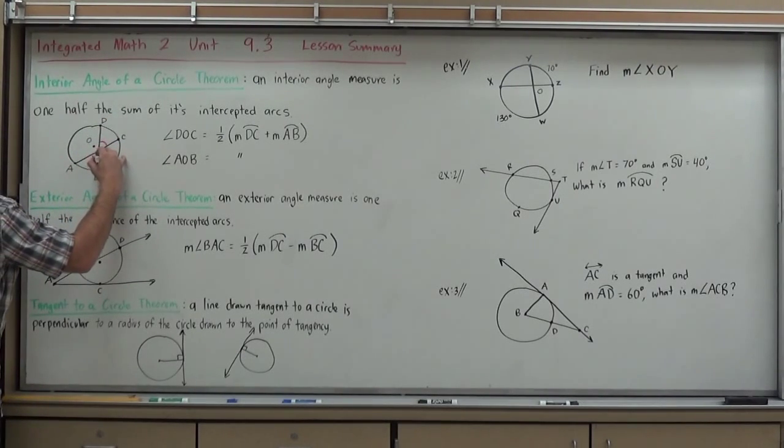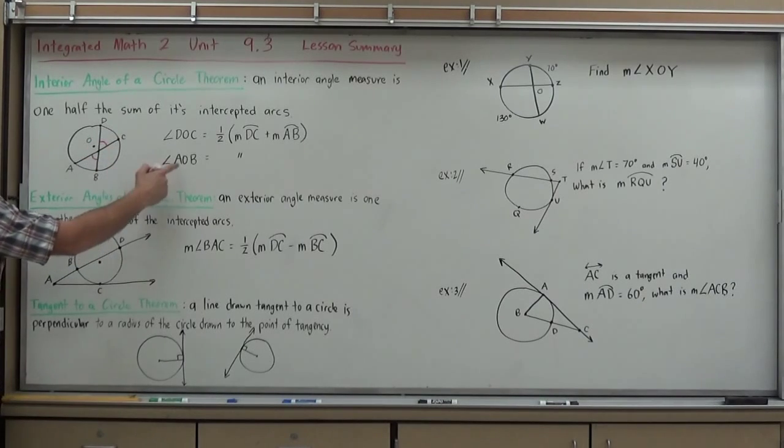Now, because AOB is a vertical angle to that, it, too, would equal the same thing. One-half the measure of arc DC plus the measure of arc AB. So, it, too, would have the same formula.